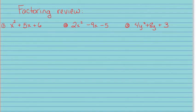We're going to review factoring today and I have three examples here. The first ones are trinomials. This is going to factor into two binomials, and because of the x squared here we're going to have an x and x. Our other two numbers have to come from the six — we need two numbers that multiply to give me six and at the same time add to give me five.